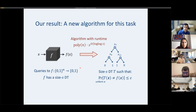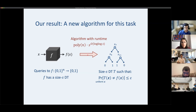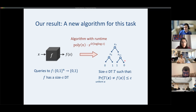Our first main result: given black box queries to a function f that has a size-s decision tree, our algorithm runs in time poly(n) — where n is the number of features — times s to the log-log-s, which is almost polynomial in s. We output a tree that, for any epsilon of our choice, has only epsilon error. Size here means the number of leaves.